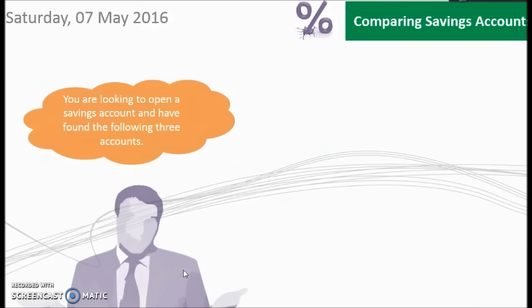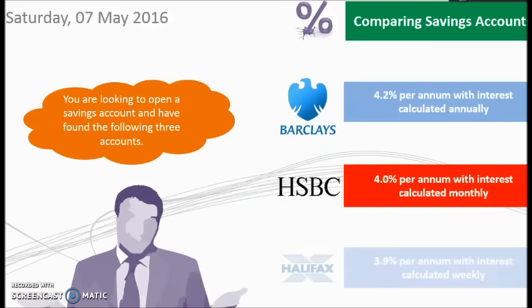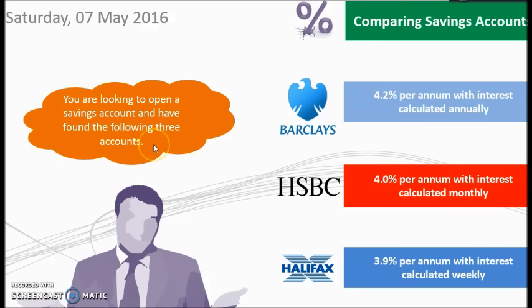Let's have a look at using the formula. Let's have a look at three offers from three different banks. We've got Barclays, HSBC, and Halifax and they've all got slightly different offers here. We've got Barclays offering us 4.2% per annum with interest calculated annually. HSBC got 4% per year with the interest calculated monthly. So how many compounding periods is that during the year? And the final one, 3.9% per annum with interest being calculated weekly. Think about how many compounding periods is that throughout the year.